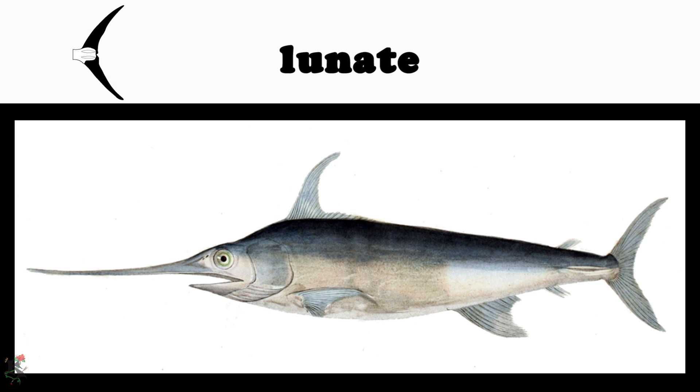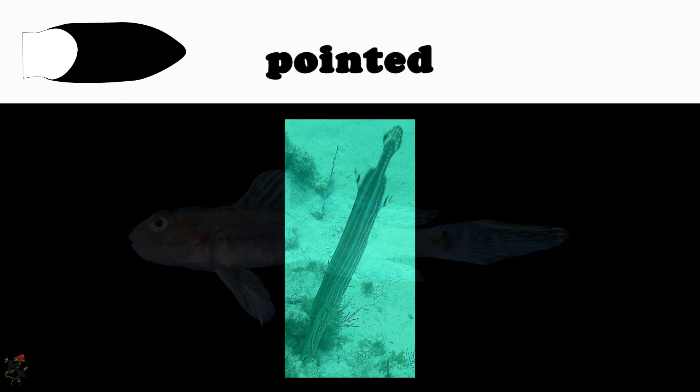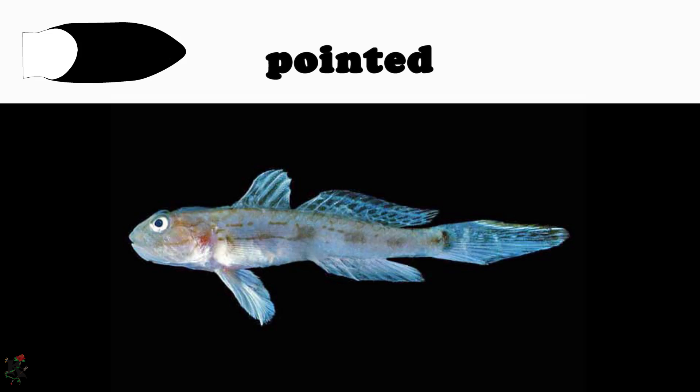A lunate tail fin can be found on a swordfish. Pointed tail fins are seen on species like trumpet fish and many gobies.